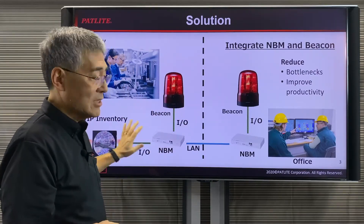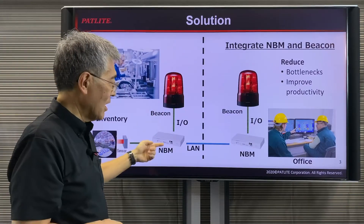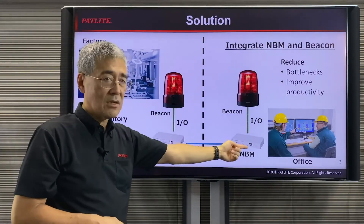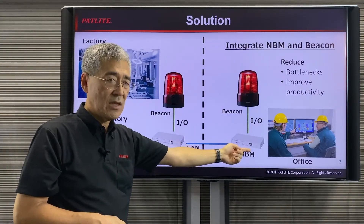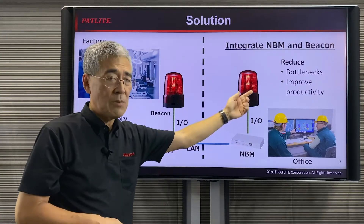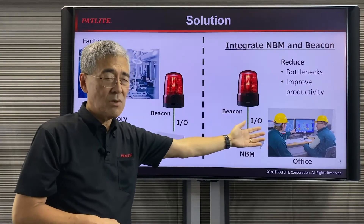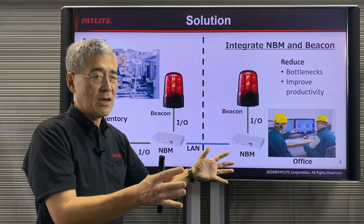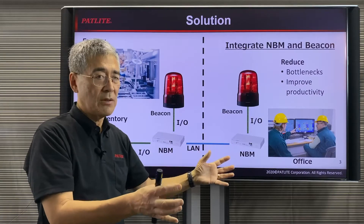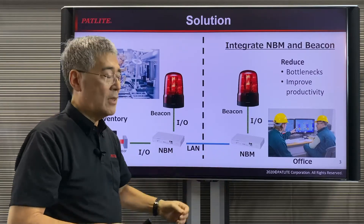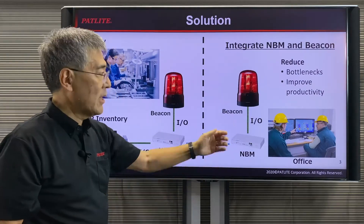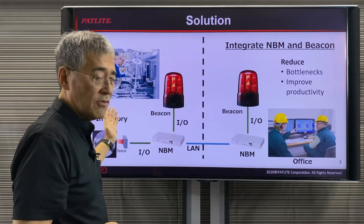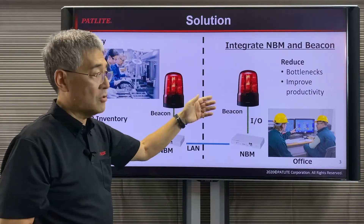If this is left unattended, the NBM can also send a signal to a different NBM through the network so that people in the office can be notified that product is just sitting there waiting to be picked up. Then they can take appropriate steps to get the inventory moved from one location to the other.